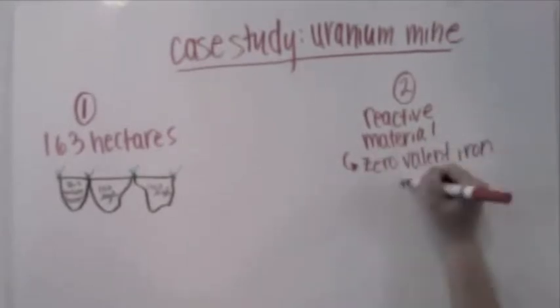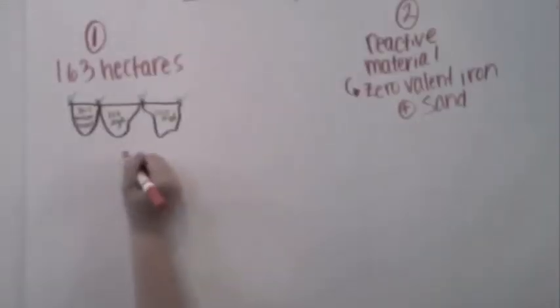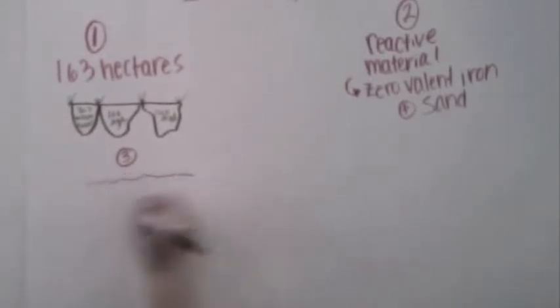Engineers built a classic permeable barrier, consisting of a continuous wall with dimensions of 6.8 meters in length, 2.5 meters in width, and 3.8 meters in depth.